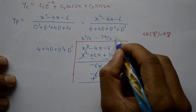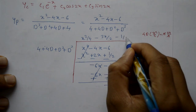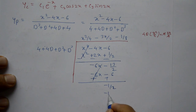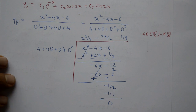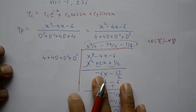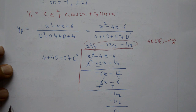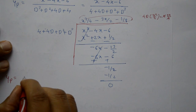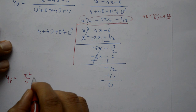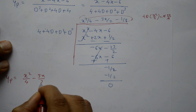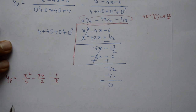So the particular integral Yp = x²/4 - 3x/2 - 1/8.